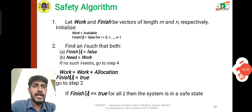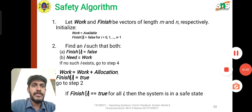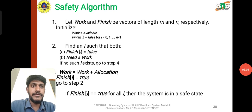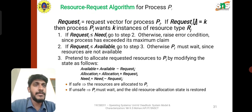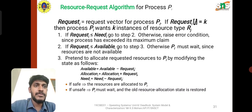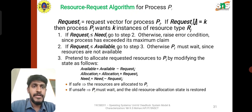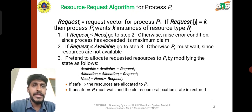For the safety algorithm, we have Work and Finish as vectors of length m and n respectively. Work is initialized equal to Available. Finish is initialized to false. We find an index i such that Finish[i] equals false and Need[i] is less than or equal to Work. For the resource request algorithm, the request vector for process Pi: if the request is valid, set Available equal to Available minus Request, and Allocation equal to Allocation plus Request. If the resulting state is safe, the resources are allocated to Pi; if unsafe, Pi must wait and the original resource allocation state is restored.